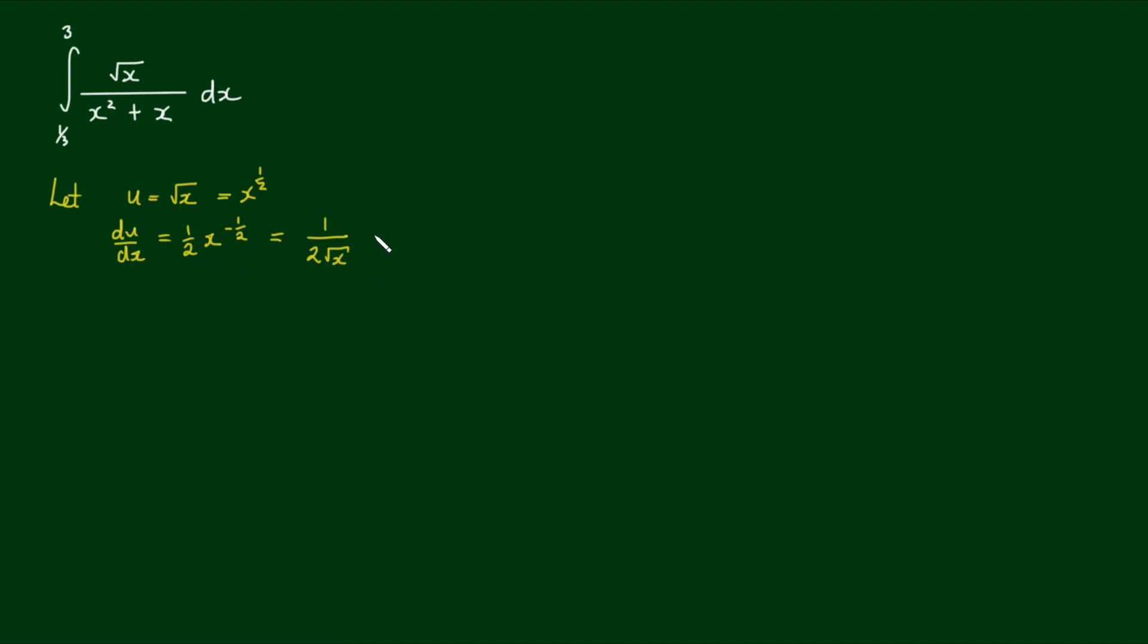And the square root of x is u, so it's one on two by u. Now I'm going to rearrange this expression so that we get all the u's on one side. So we have two u by the differential du, and that is equal to dx.